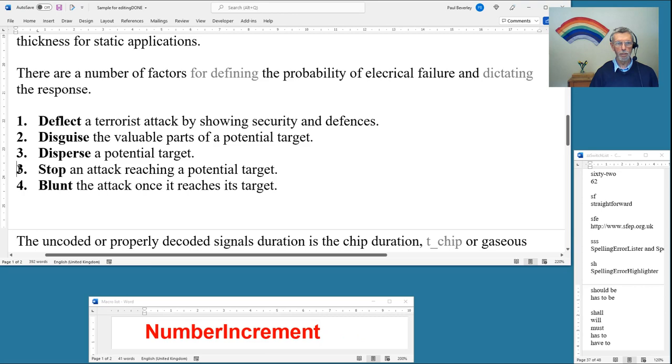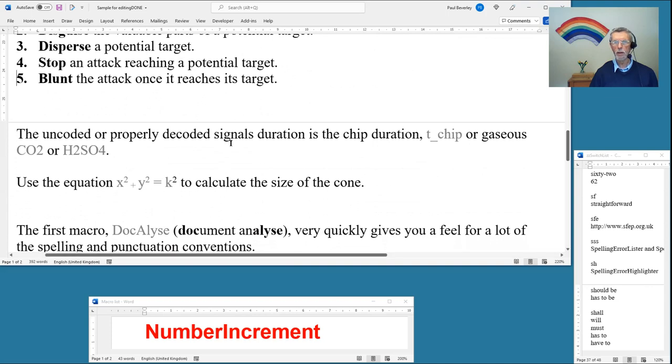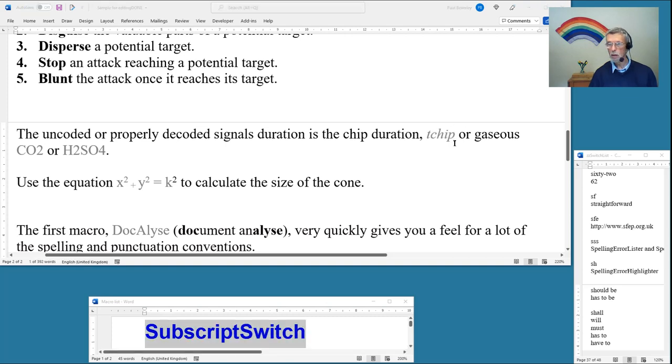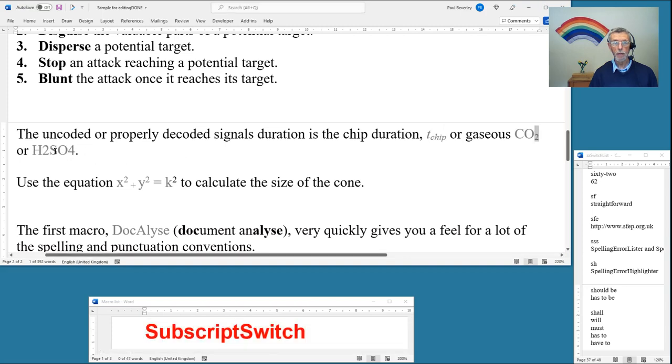The uncoded or properly decoded signal's duration is the chip duration, 1 chip or gaseous. Oh, this should be a variable, so we have it as subscript. And these also need subscripting. Yeah, it's just four, there we go. We've got some more of these, so that's, oops I didn't want that, I should have put the cursor there first so that I can do one, two, three of those.